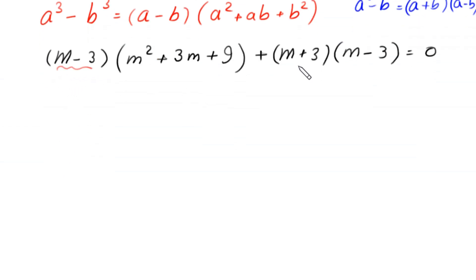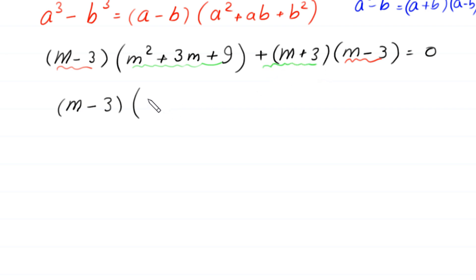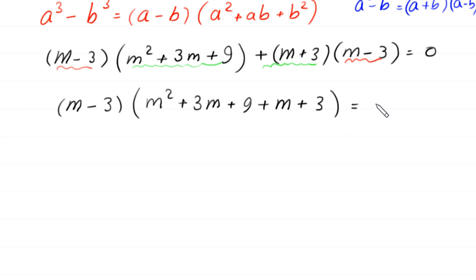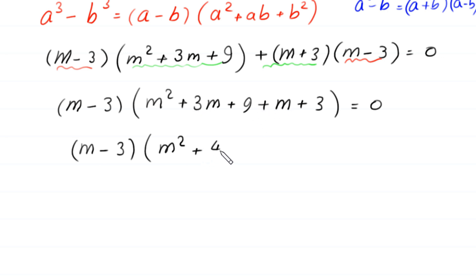Now, the expression (m minus 3) is a common factor. So we factor out (m minus 3), and in the bracket we are left with m squared plus 3m plus 9 plus m plus 3. This simplifies to: (m minus 3) times (m squared plus 4m plus 12) is equal to 0.